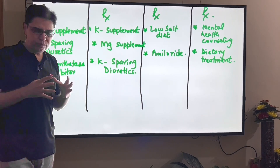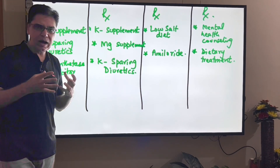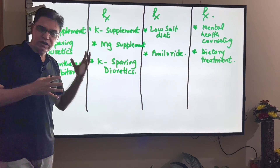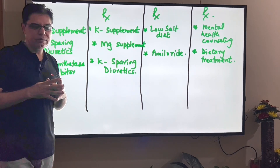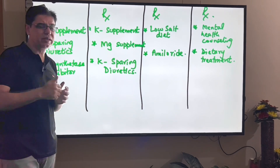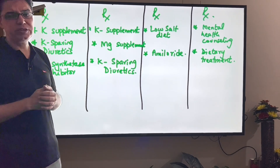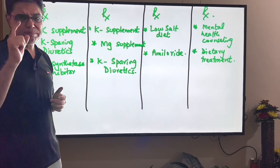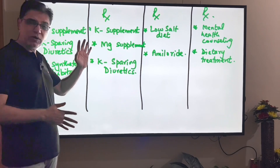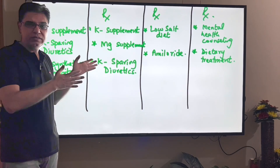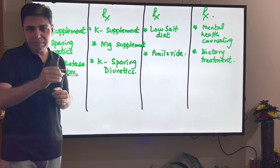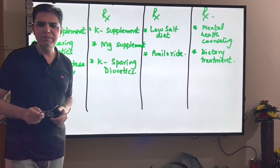In summary, Bartter, Gitelman, Liddle, and pseudo-Bartter syndrome all produce primarily hypokalemic hypochloremic metabolic alkalosis, but differ in age of presentation, specific electrolyte disturbances, blood pressure, and underlying pathology. If you liked this video, please give it a thumbs up, share it with your friends, subscribe to the channel, and leave any questions in the comments below.